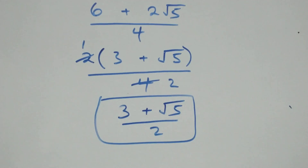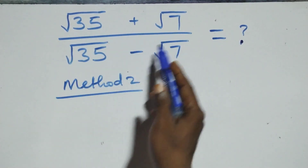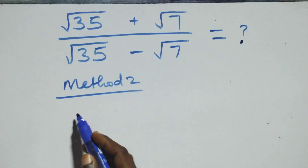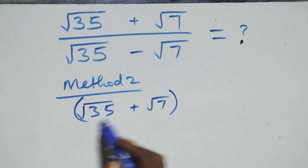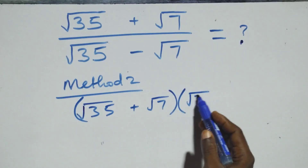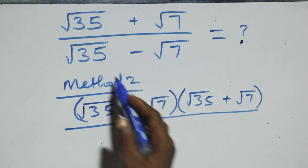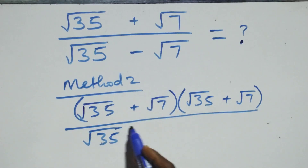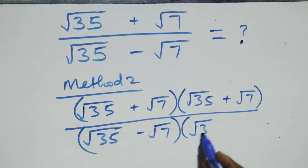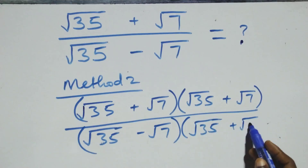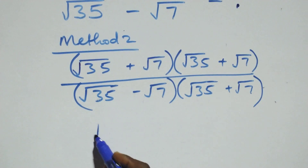Now let's use the second method here. From here we can rationalize this directly: multiply the numerator and denominator by the conjugate of the denominator. This becomes root 35 plus root 7, multiplied by the conjugate of the denominator, which is also root 35 plus root 7. Then divide by root 35 minus root 7, multiplied by root 35 plus root 7.